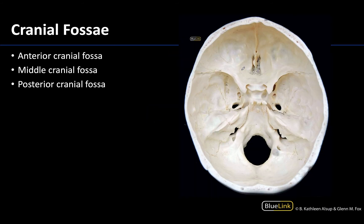Now let's move on to a view we will be using quite a bit. In this view the calvaria or skull cap has been removed, as well as the brain and associated meninges, and we are looking superiorly at an internal view of the basicranium. This is where the brain would have sat during life. This area can be divided into three cranial fossae arranged in a stair-step fashion from the shallowest anterior cranial fossa to the deepest posterior cranial fossa. The foramen magnum is always posteriorly placed, so that direction is anterior.